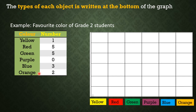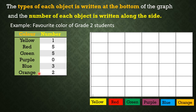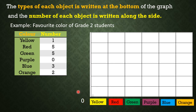The next thing you are going to write on the graph are the number of each object, and we are going to write it alongside. Take note that the least number is 0 and the highest number is 5. So we are going to start from 0, then 1, 2, 3, 4, and 5.